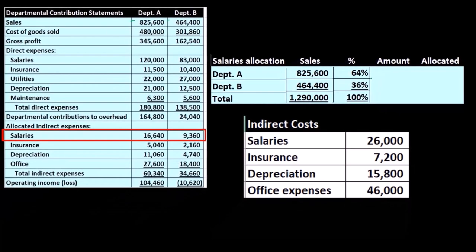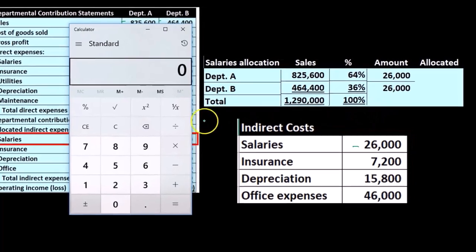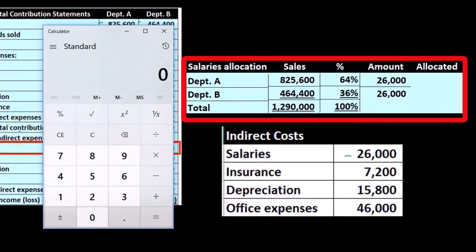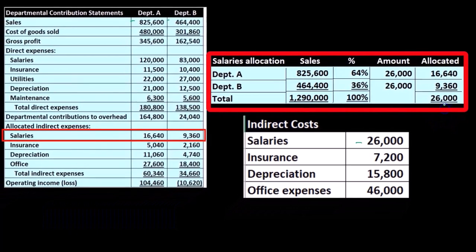We're going to break out the salaries — 64% and 36%, that's going to be the percent breakout. So now we know the total salaries is $26,000. We'll multiply: 26,000 times 0.64 is $16,640, and 26,000 times 0.36 is $9,360, and that adds up to $26,000.